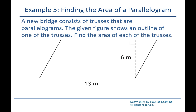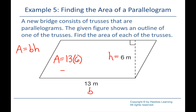With a parallelogram, that's one of our easier area formulas — just base times height. It's really similar to a rectangle, just a little leaned over. Our base is always going to be our bottom number, and height we always need a vertical line. So the height is 6 meters. 13 times 6 gives us 78 square meters.